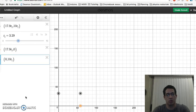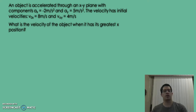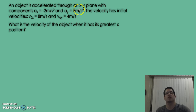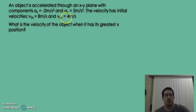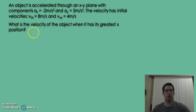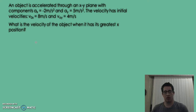Now we're going to do this again with a much more complex example. We have an object being accelerated in two dimensions — the xy plane. We've been given the acceleration in terms of components i and j, rather than in magnitude-direction notation, along with initial velocities. The question asks: what is the velocity of the object when it has its greatest x position?